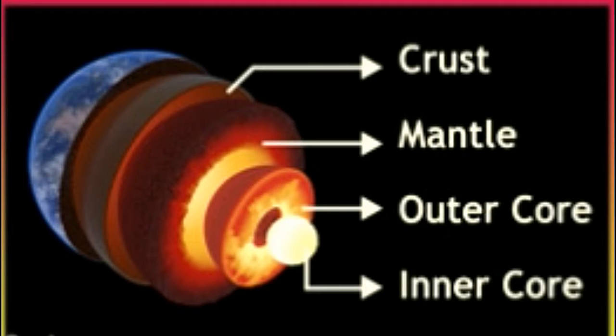As a result of the cooling process, denser materials like iron and sulfur sank to the inside of the Earth, whereas lighter materials like silicates and water came to the surface.